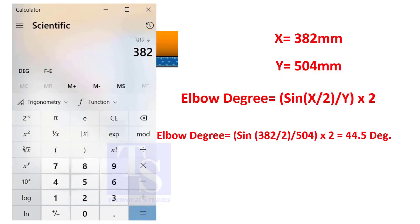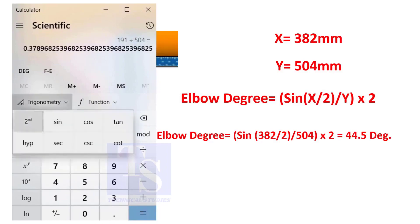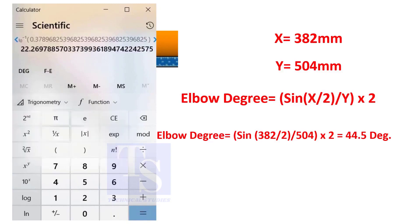You can try this method on pipe spools to measure the distortion due to the welding. So, the degree of the elbow is 44.5.